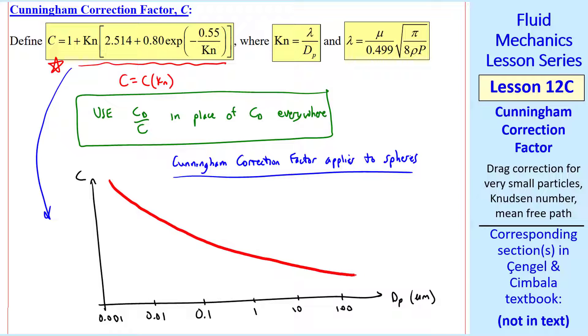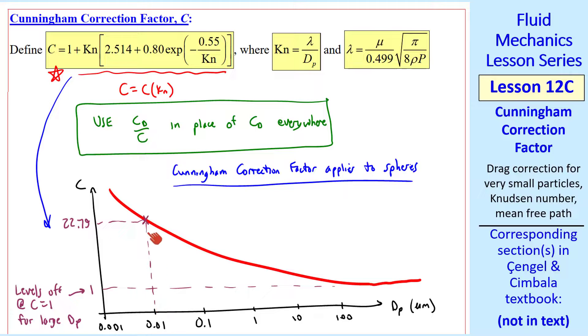The curve looks something like this. C decays as dp increases, and it levels off at C equal 1 for large dp. For example, at 0.01 microns, C turns out to be about 22.79, which is significant.